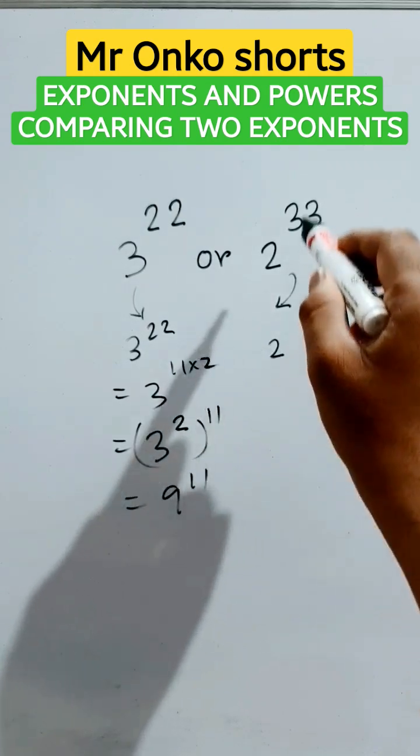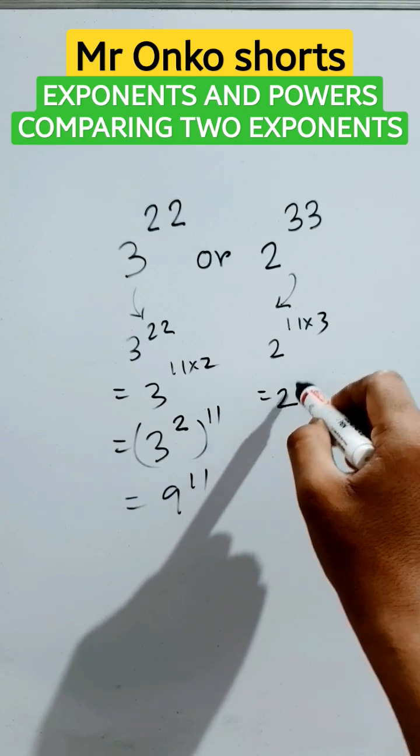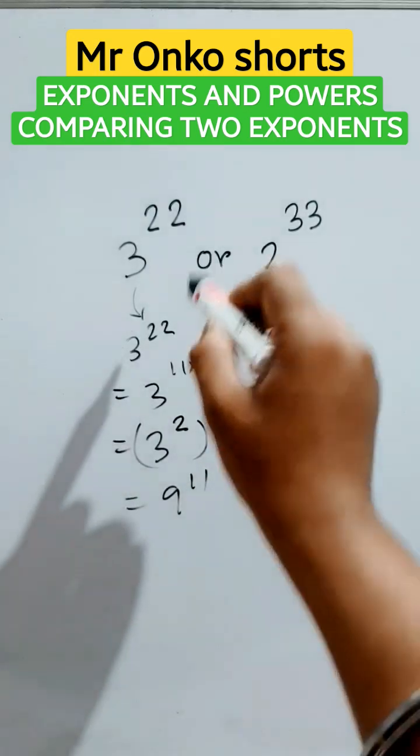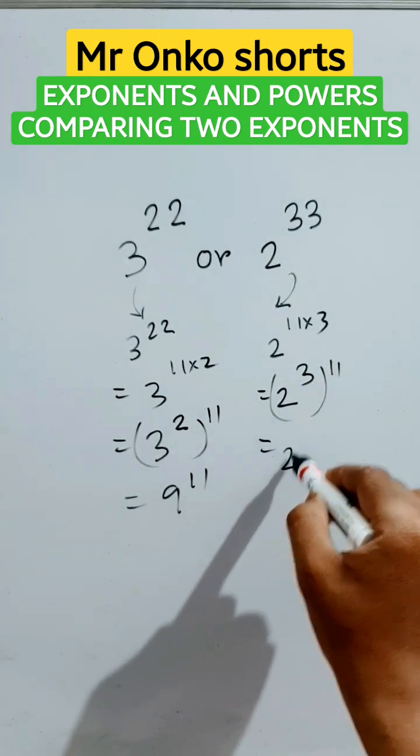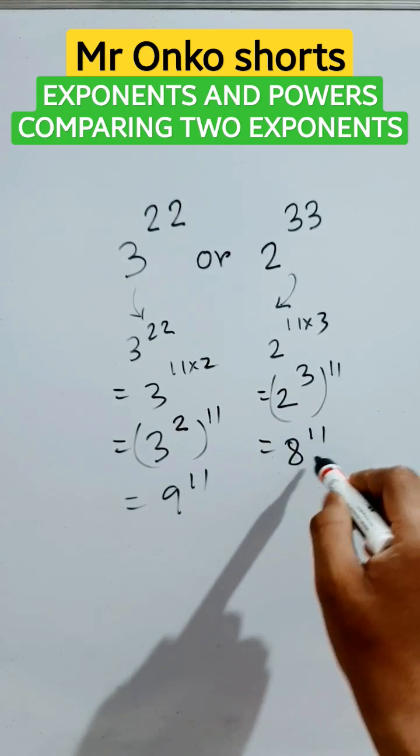Now, 2 to the power 33 is 2 to the power 11 times 3, which can be written as 2 to the power 3 raised to the power 11. All these properties are based on the laws of exponents and powers. 2 to the power 3 is 8, so this equals 8 raised to the power 11.